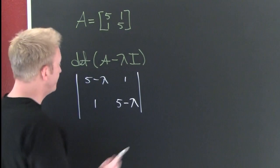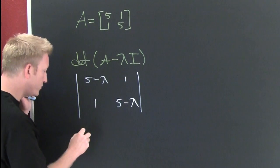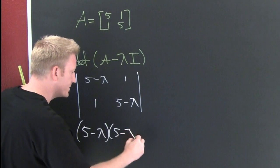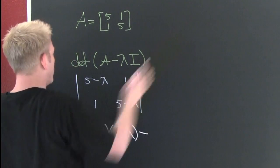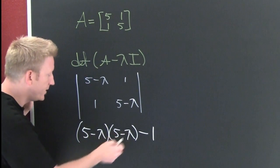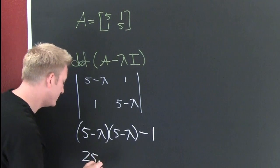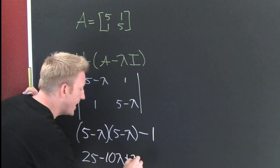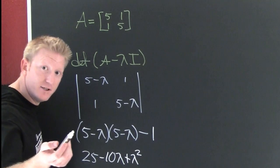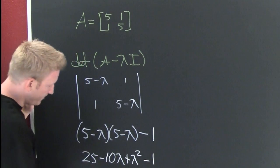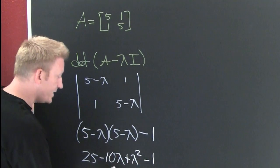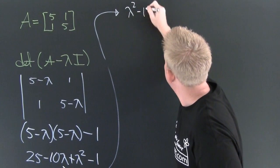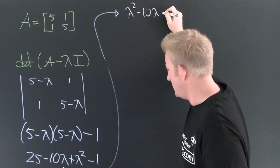So how do you take a determinant of a two by two? This is five minus lambda times five minus lambda minus one times one. I multiply this out: looks like I have 25, minus 10 lambda, plus lambda squared. If you want to see multiplying special products, check out the video on multiplying special products. Minus one. Let me clean it up.